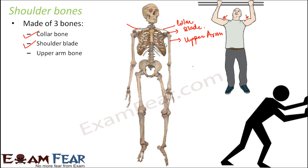The collar bone and the shoulder blade together form the shoulder bone. The upper arm bone and the shoulder blade have a connection — their joint is a ball and socket joint, because of which complete movement is possible. You can actually rotate your upper arm, rotate your entire arm over your shoulder blade. The shoulder blade acts as the socket, and the upper arm has a rounded top so it acts like the ball — hence the ball and socket joint.